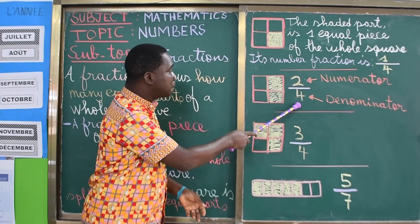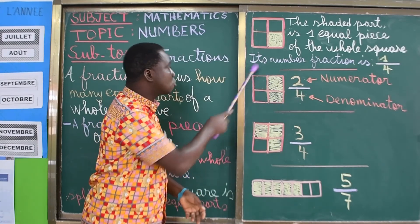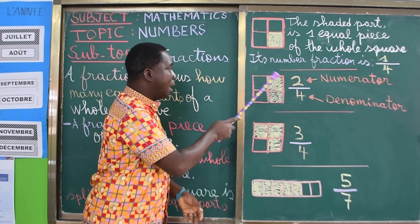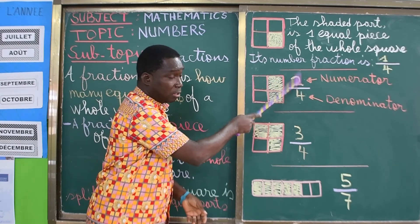So the four is the whole square, one, two, three, four, and the shaded part is the two.